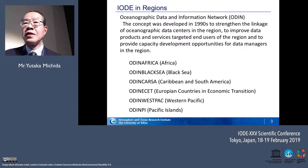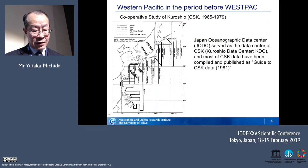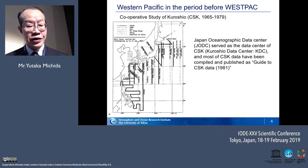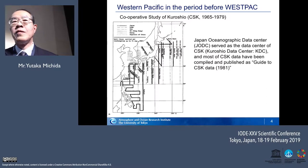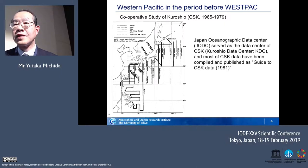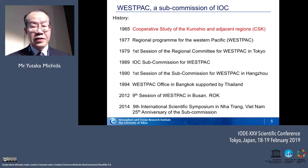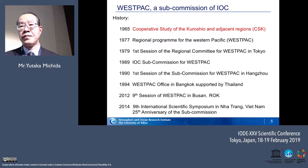For ODIM in Africa, the most successful one is providing a very important opportunity for African countries: the capacity development of oceanographic data and information management. In the Western Pacific region, we have a subsidiary body called Westpac. But before Westpac, we had a very successful project called the Cooperative Study of the Kuroshio, CSK. During that time, the Japan Ocean Data Center served as a data center called the Kuroshio Data Center, which was very successful by producing data products, including the publication guide to CSK data.